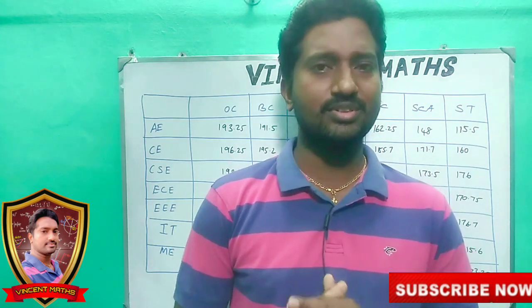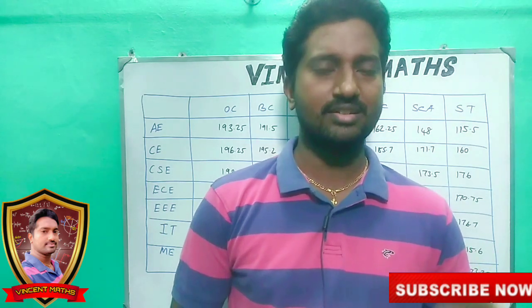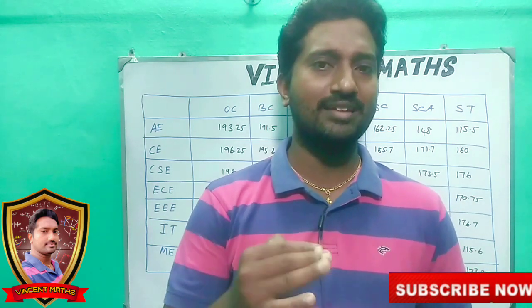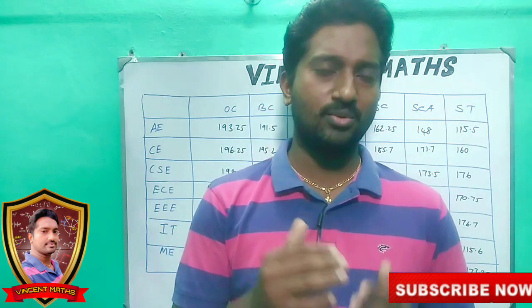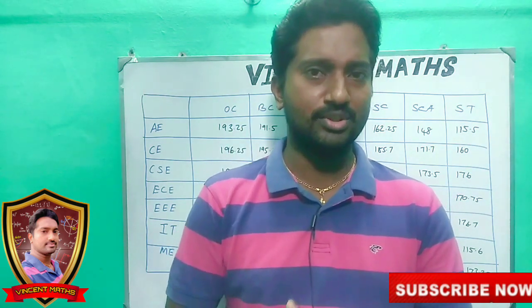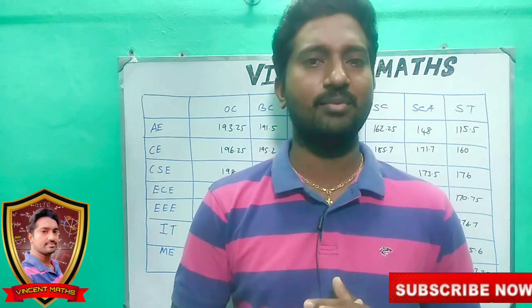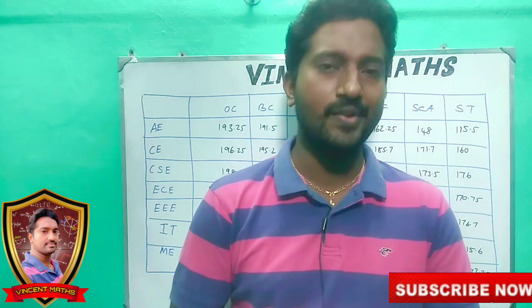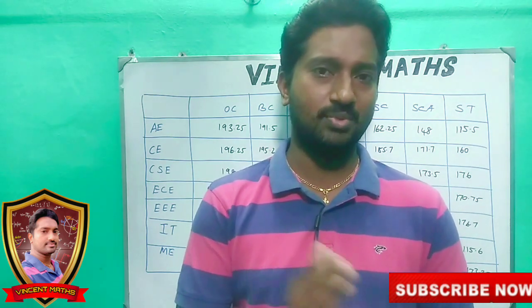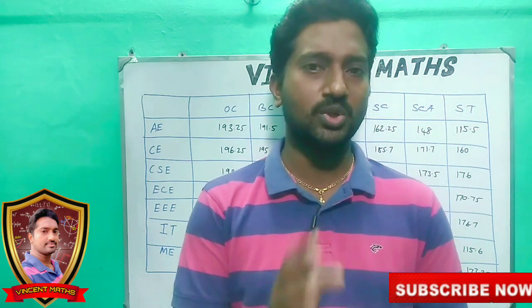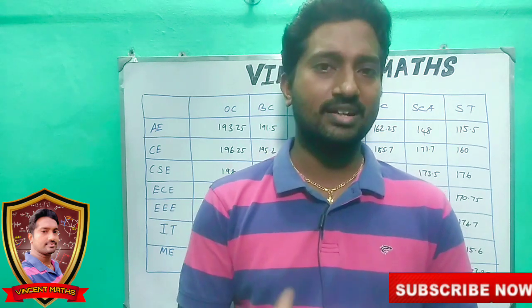Last year, we know how much the cutoff started. We need to understand how to calculate the cutoff. For engineering, the max is 100 marks each for Chemistry and Physics, and the first subject mark is out of 200. Let's look at the cutoff.